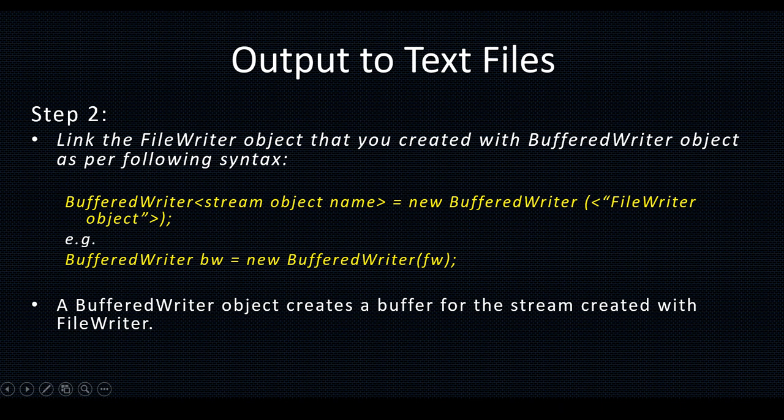A BufferedWriter object creates a buffer for the stream created with FileWriter. We already discussed what a buffer is — it takes data from the keyboard and stores it in memory. The time duration where data is stored before you write it into the file is called buffering. The BufferedWriter is used for storing the data.